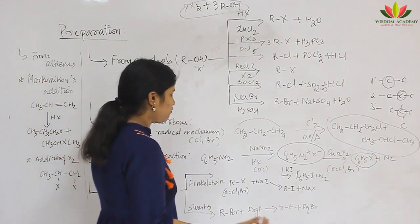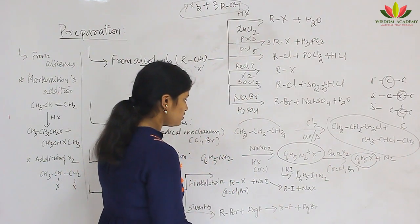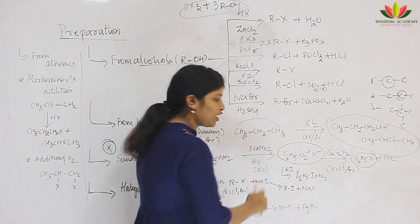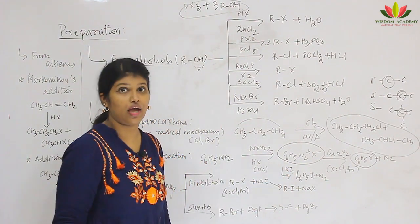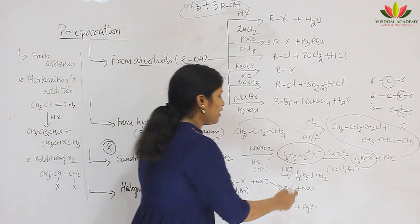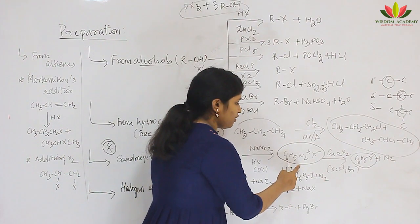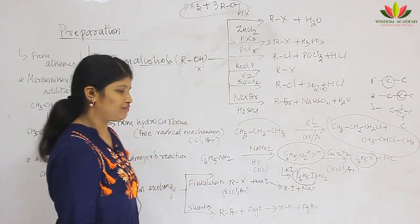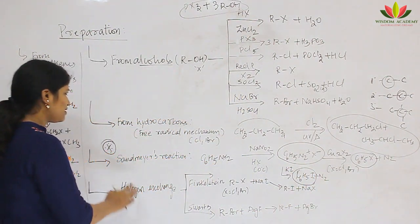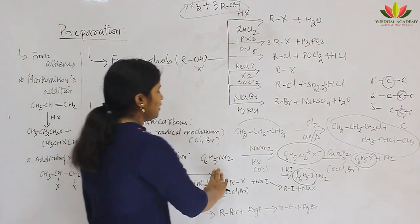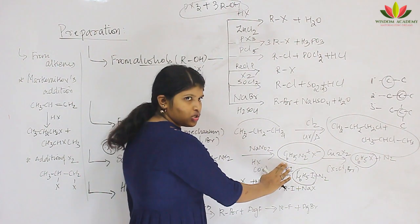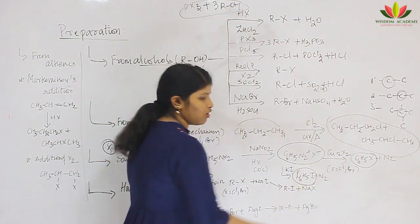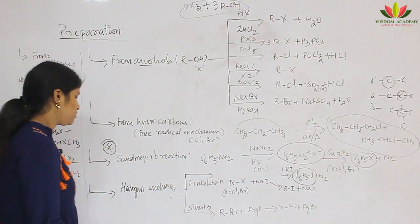If we need an iodo compound, with the same benzene diazonium chloride we can add potassium iodide or any strong iodine salt to get iodobenzene. So in the Sandmeyer reaction, aniline is converted to benzene diazonium chloride, and this benzene diazonium chloride reacts with various salts to give halo compounds.